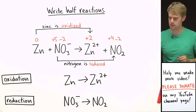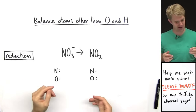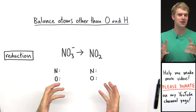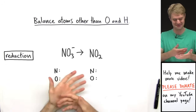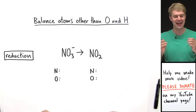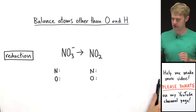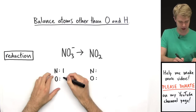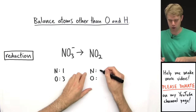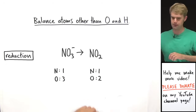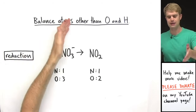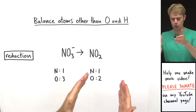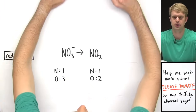Now let's balance each one of these, starting with the reduction half-reaction. We have two elements — nitrogen and oxygen. On the left we have one nitrogen and three oxygens; on the right we have one nitrogen and two oxygens. Our first step is to balance atoms other than oxygen and hydrogen — that would be nitrogen — and we're all set, because we have one nitrogen on each side.